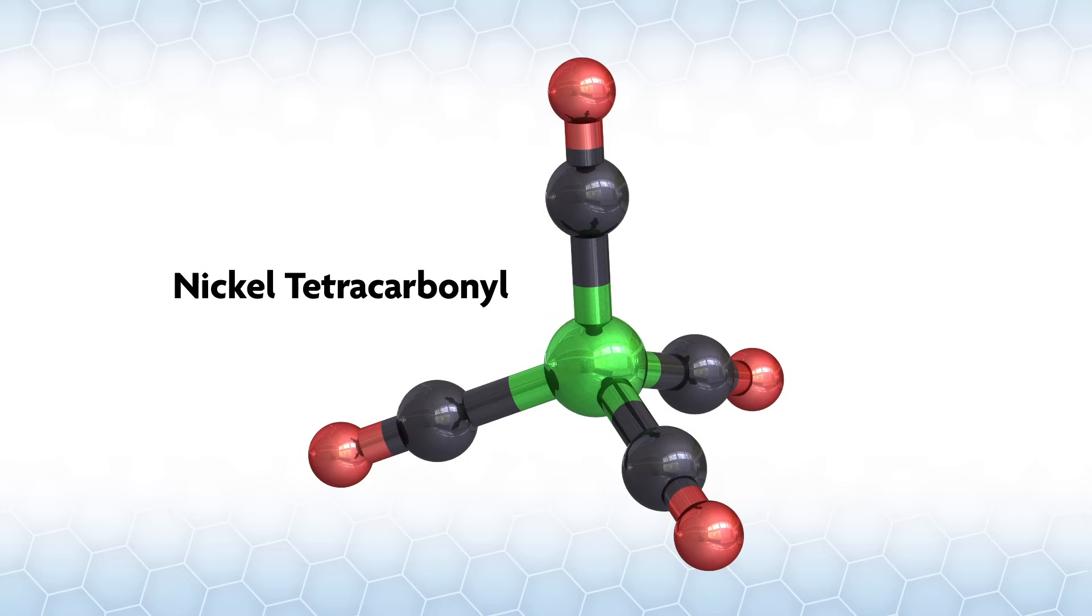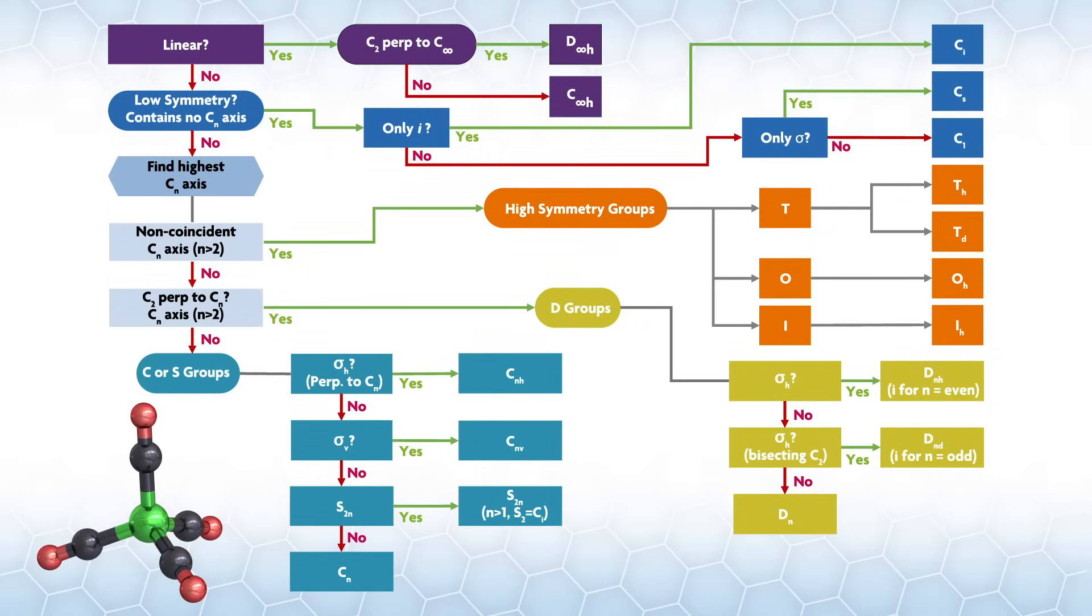Let's quickly look at a couple of transition metal examples and assign the valence orbitals to irreducible reps. Here is nickel tetracarbonyl. If you go through our point group assignment flowchart, the compound is not linear. It's not in a low symmetry group. It has a C3 axis. In fact, it has multiple C3 axes that are not coincident. So we're in a high symmetry T group. The mirror planes contain the C3, so it is in the Td group.